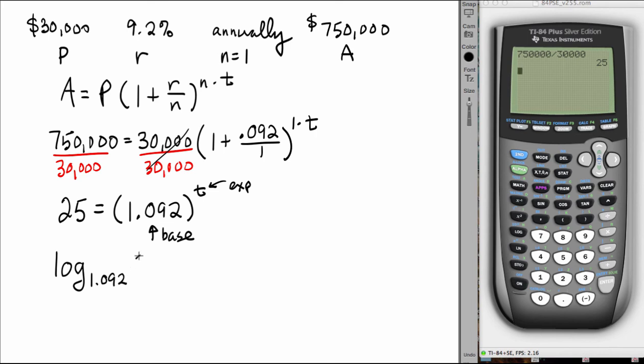Go back to the calculator. There is the log base function, arrow up twice on the calculator. Put in the base one point zero nine two of twenty five and press enter. This will tell us the correct number of years.